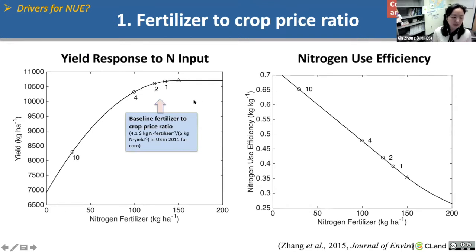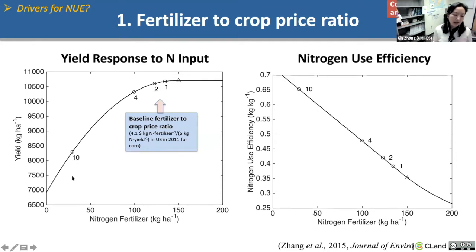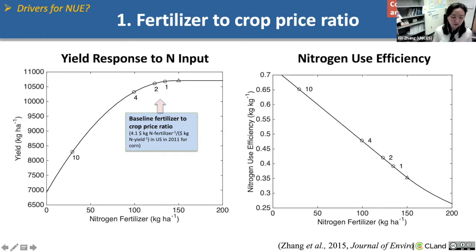The first driver is the role of fertilizer-to-crop price ratio. The typical yield response function shows that for a given farm under the same management practices and technology, as you add more nitrogen fertilizer, the yield increase tends to level off — because other limiting factors become more important. Consequently, nitrogen use efficiency will decline. The level of nitrogen fertilizer application rate is determined by socioeconomic factors such as market prices of fertilizer and crops, as well as farmers' perceptions of risk. The takeaway is that for a given technology, NUE is not a constant number — depending on the fertilizer and crop price, fertilizer application rates and NUE can vary considerably.